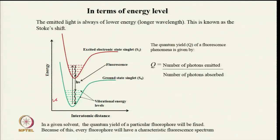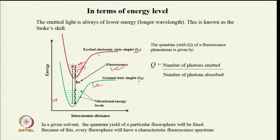This is shown in the potential energy diagram with S0 and S1 electronic states and their vibrational levels. On absorption, the molecule goes from the lowest vibrational level of S0 to some vibrational level of S1. Then a non-radiative transition brings it to the lowest vibrational level of S1. From there, radiative transition back to S0 is fluorescence.